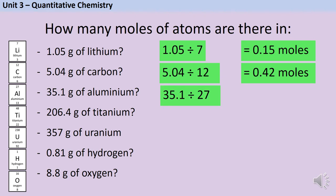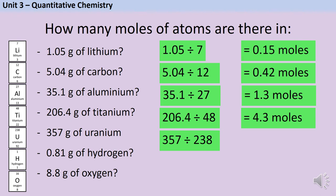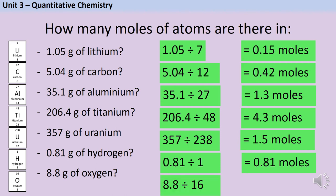35.1 grams of aluminium contains 1.3 moles of aluminium atoms. 206.4 grams of titanium contains 4.3 moles of titanium atoms. 357 grams of uranium contains 1.5 moles of uranium. 0.81 grams of hydrogen is an easy one because the relative atomic mass of hydrogen is one, so that's of course 0.81 moles. And finally, 8.8 grams of oxygen contains 0.55 moles of oxygen atoms.